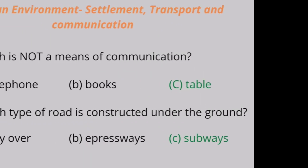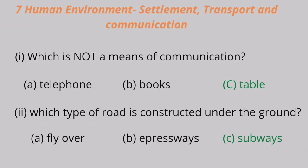Chapter 7: Human Environment — Settlement, Transport and Communication. Question 1: Which is not a means of communication? A. Telephone, B. Books, C. Table. Table is the correct answer. Table is not a means of communication.